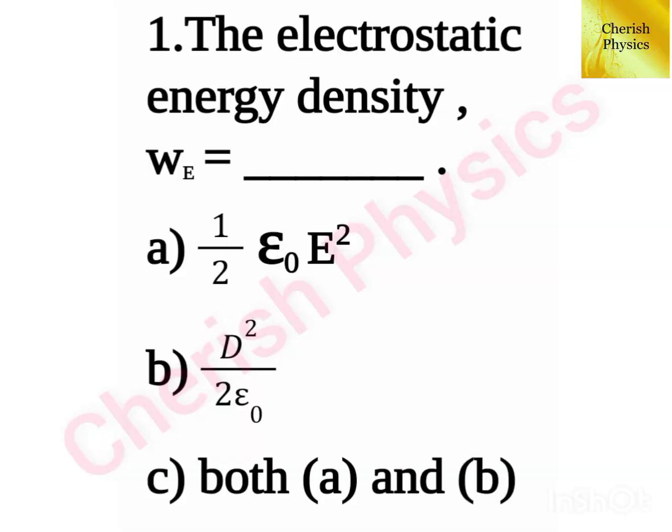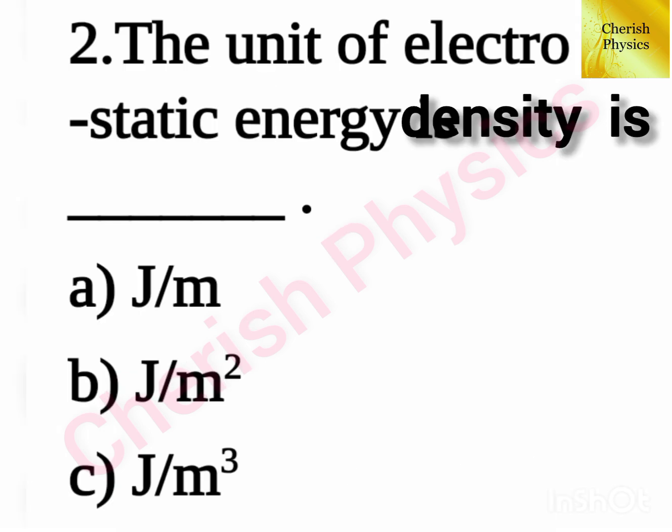The electrostatic energy density w is equal to — and the unit of electrostatic energy density is —